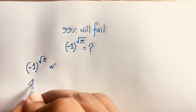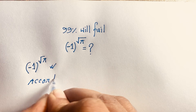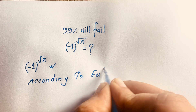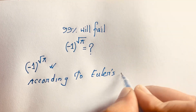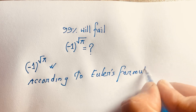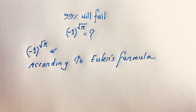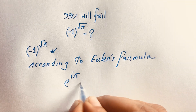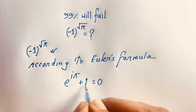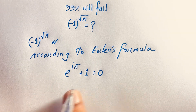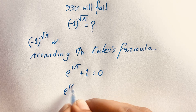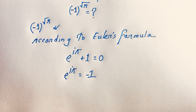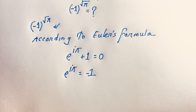According to Euler's formula, e to the power i·pi plus one is equal to zero. Now you can easily rearrange this, so it will be e to the power i·pi is equal to negative one.